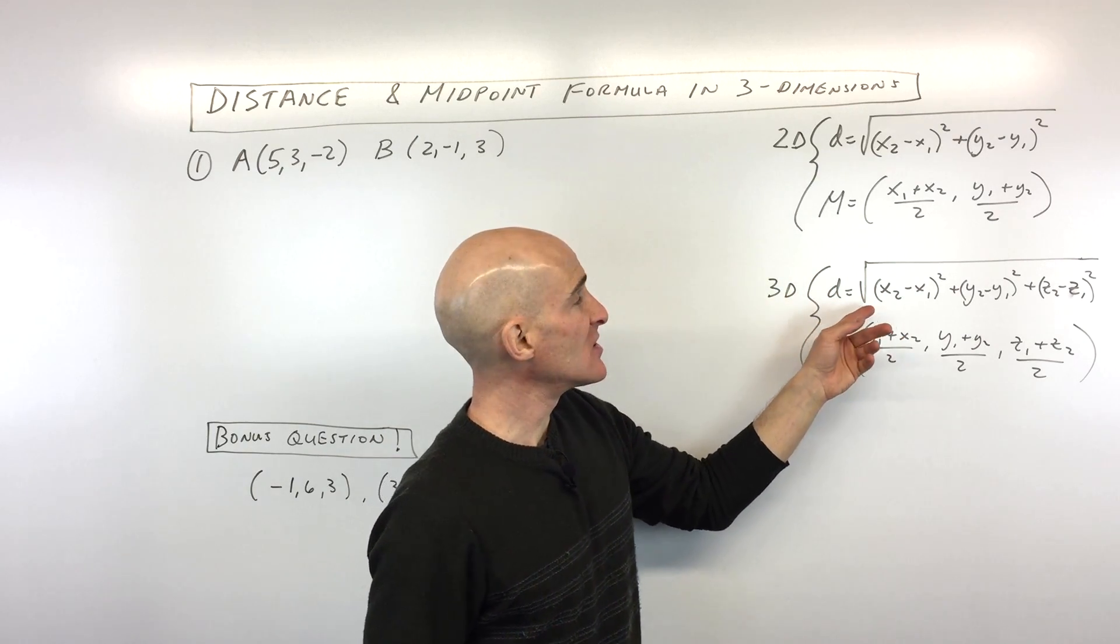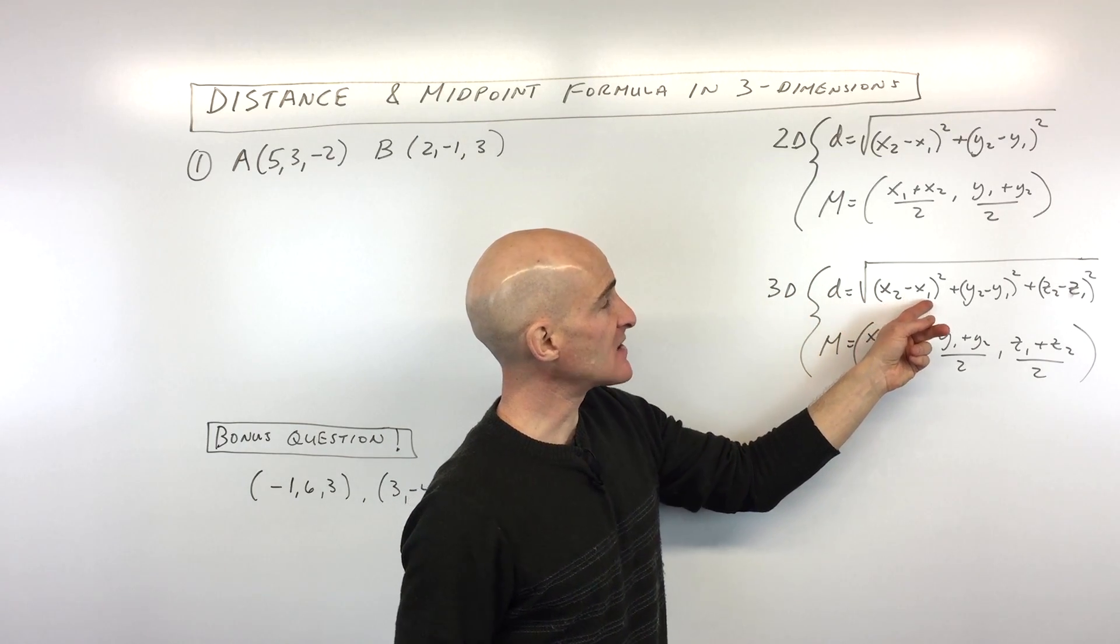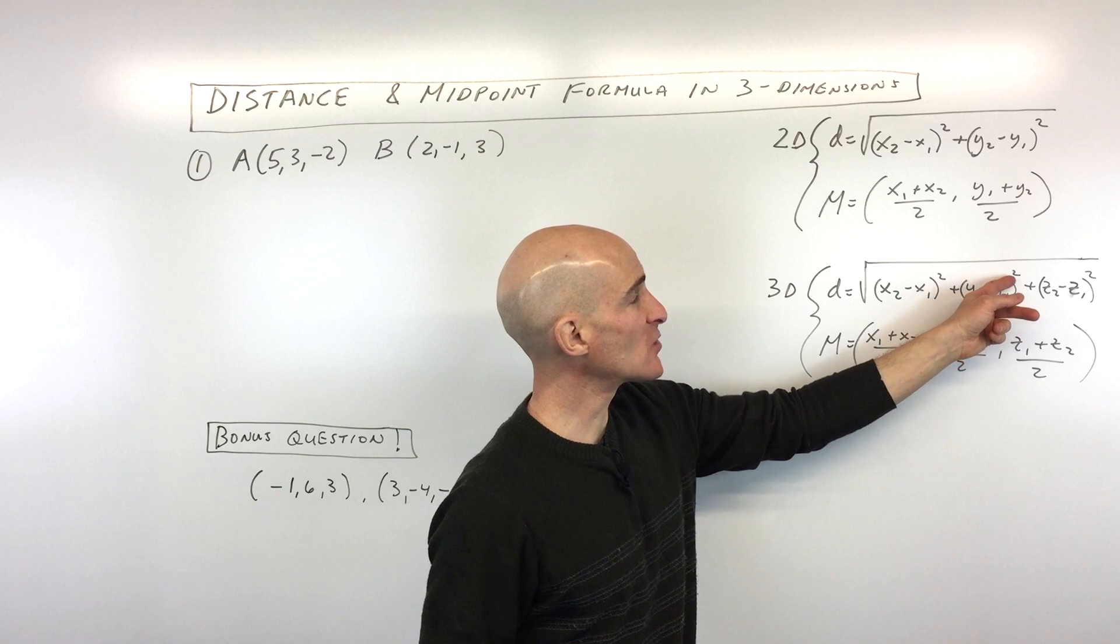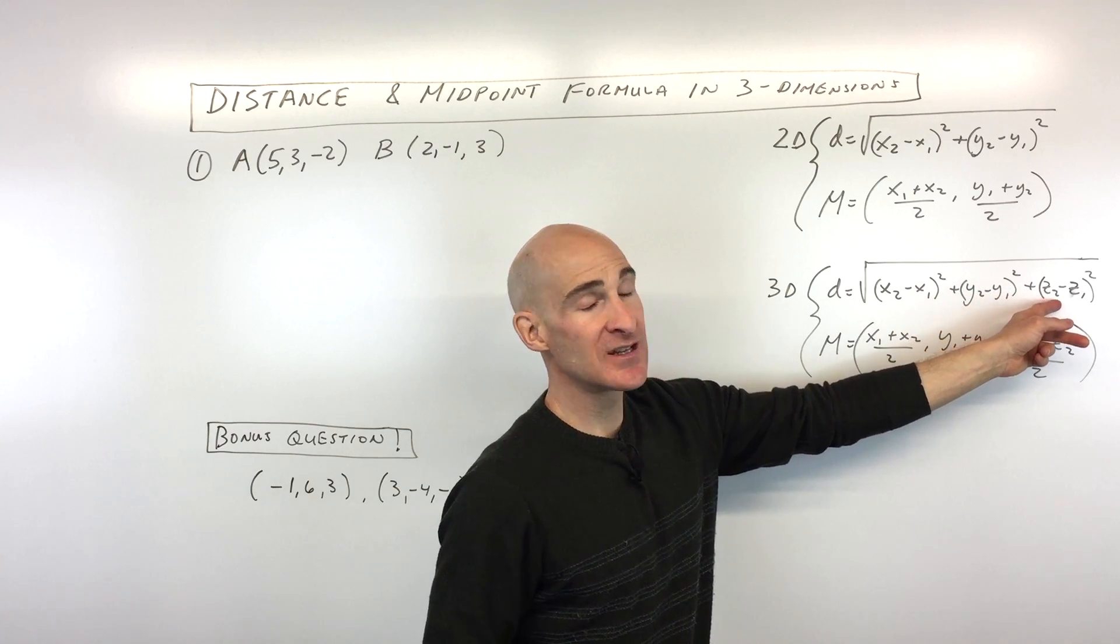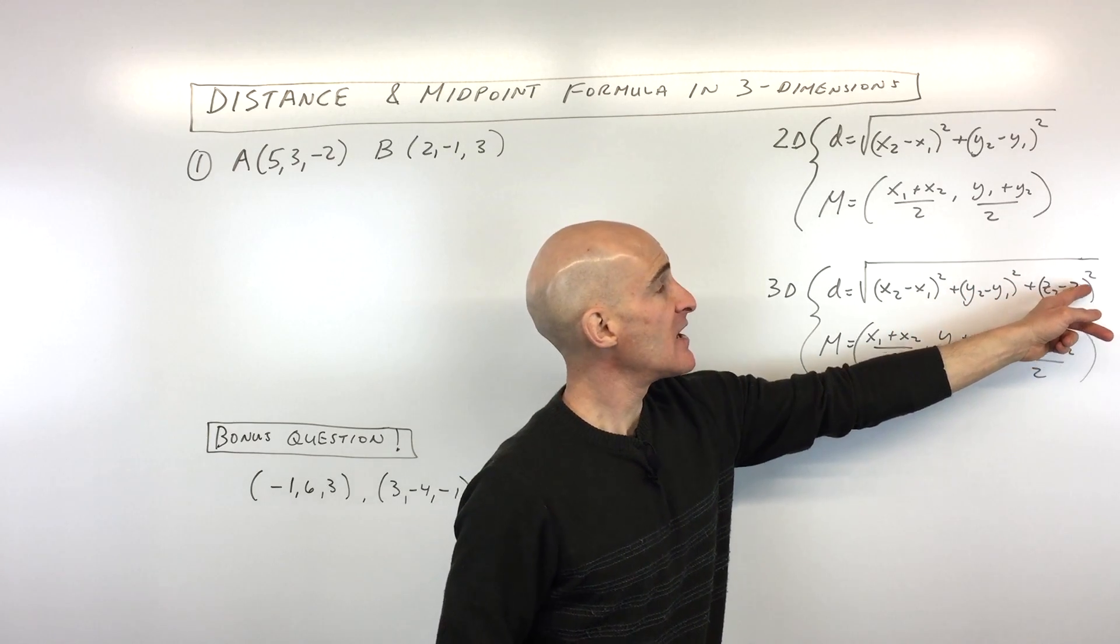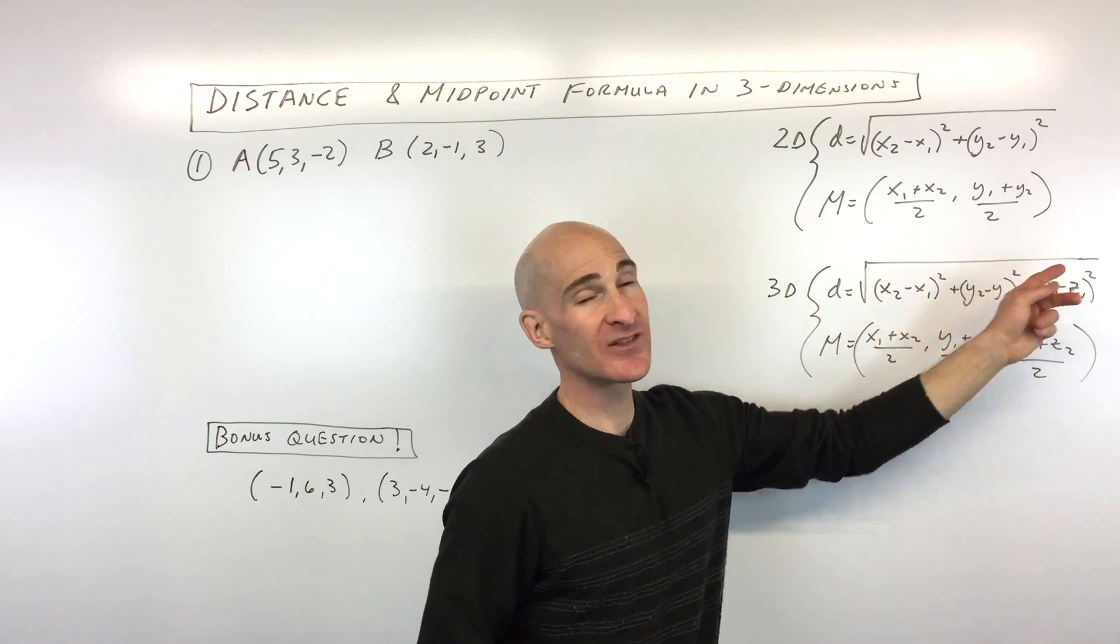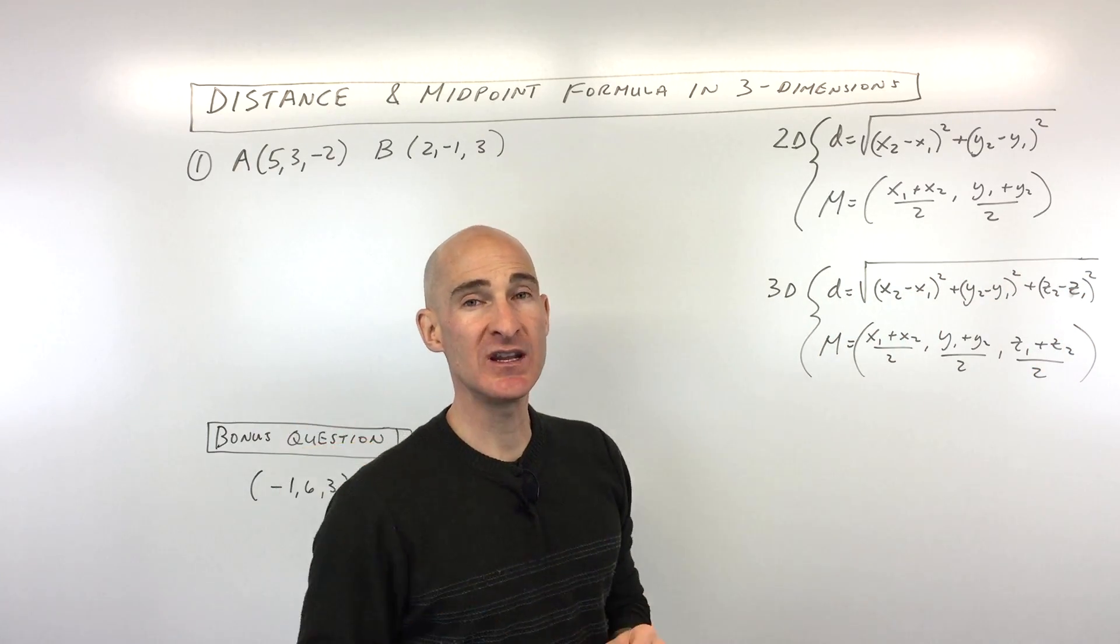When you do the distance in three dimensions, you're doing the same thing. You're taking the difference in the x's and squaring, you're taking the difference in the y's and squaring, and you're also taking the difference in the z-coordinates and squaring. You add all those quantities together and take the square root. That gives you the distance in 3D.